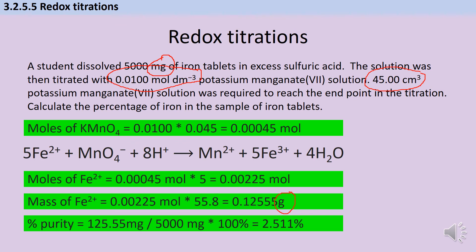The smallest number of significant figures given in the question is three, so round the answer to three significant figures: 2.51%.